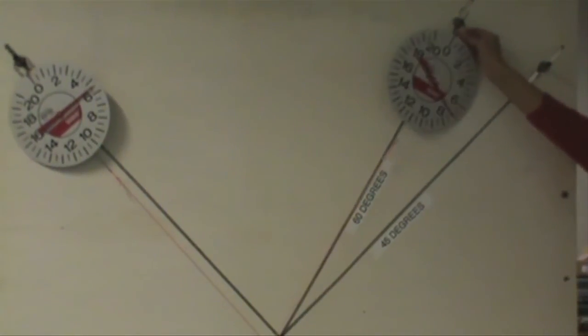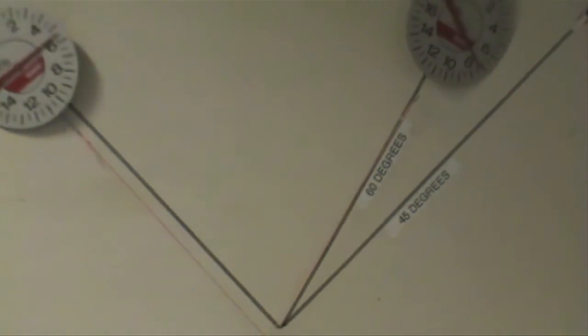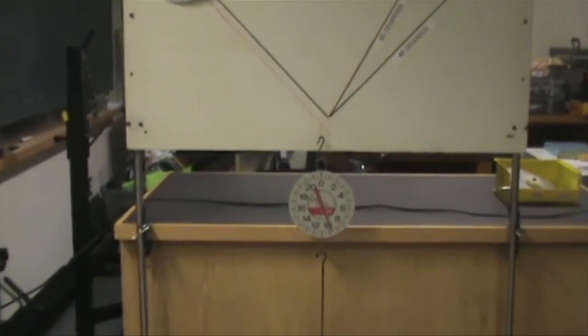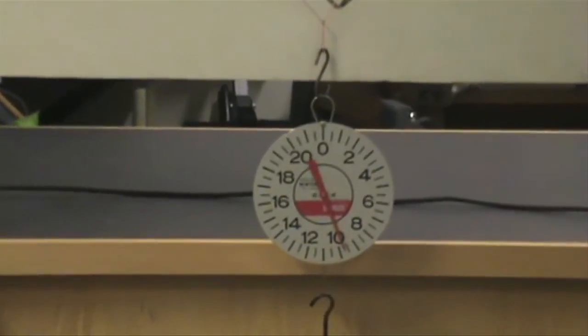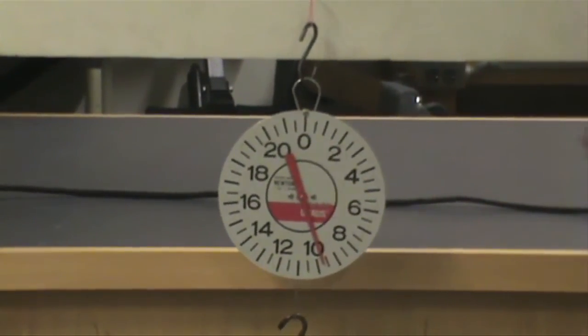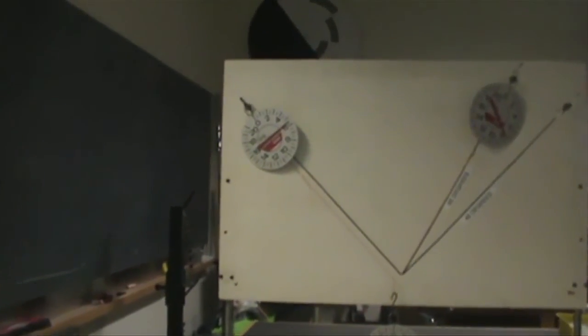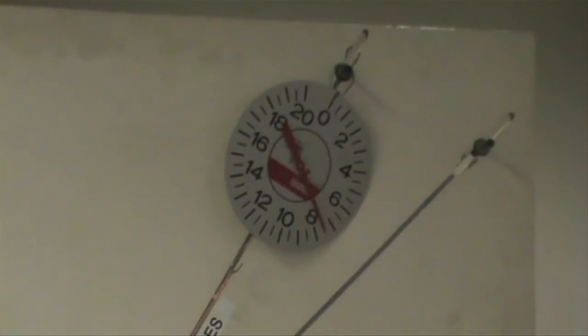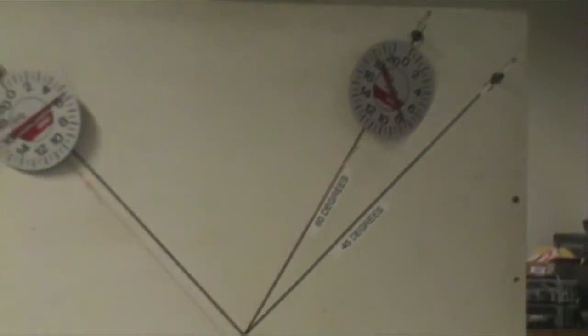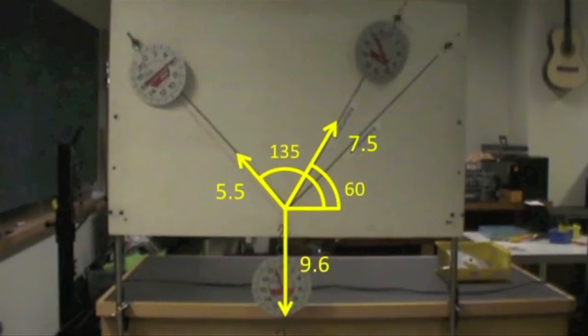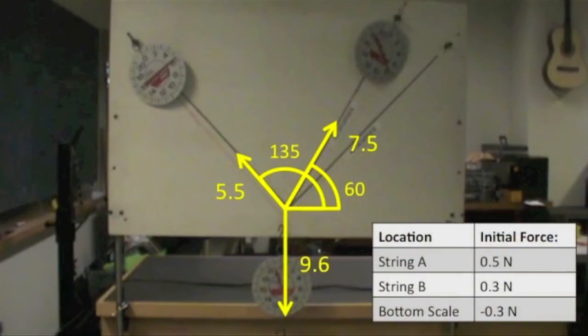But we want to make sure that this wasn't an artifact of having so much symmetry in the system. To do this, we move string B 60 degrees off of horizontal. As you can see, the tension force on the bottom string did not change. It still reads 9.6 Newtons. But the force on each upper Newton scale has changed. The tension force on string A is 5.5 Newtons. And the tension force on string B is 7.5 Newtons. We leave it as an exercise to you to decompose the tension forces into horizontal and vertical components and verify that within the expected measurement error, the forces sum to zero.